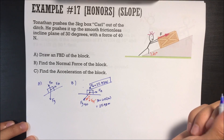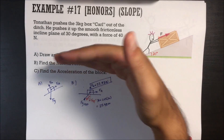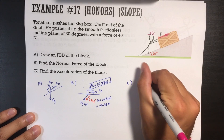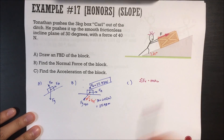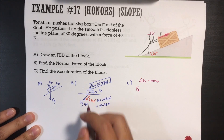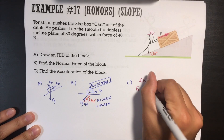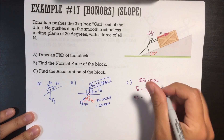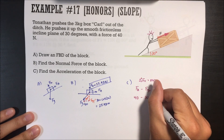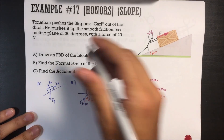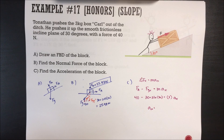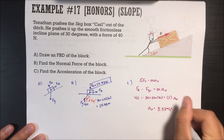Find the acceleration of the block — this is where it gets a little more complicated. The box is not accelerating in the y direction at all, only in the x direction. Sum of all forces in x equals mass times acceleration in x. There are two forces in the x direction: the force applied going to the right and the force of gravity in x going to the left. So: force applied minus force of gravity in x equals mass times acceleration in x. Force applied is 40; force of gravity in x is 30 times sine of 30, which is 15; mass is 3. This gives us 8.33 meters per second squared up the incline.